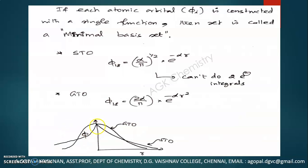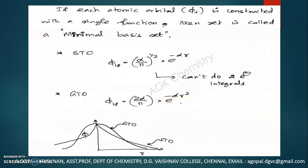To avoid this problem, a group of scientists came with another idea: instead of using this function, if we use a Gaussian type function e^(−αr²), then we can avoid this cusp problem in the atomic orbital functions. But Gaussian functions never directly behave like atomic orbital functions as proposed by Slater.